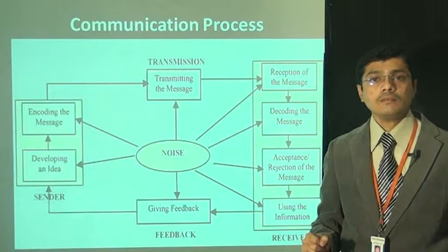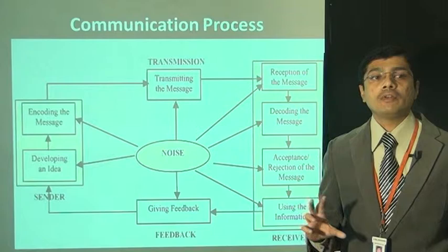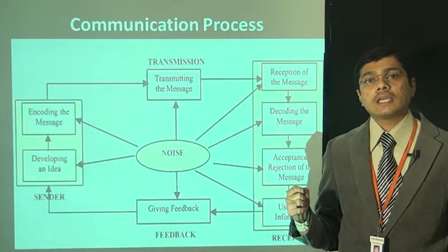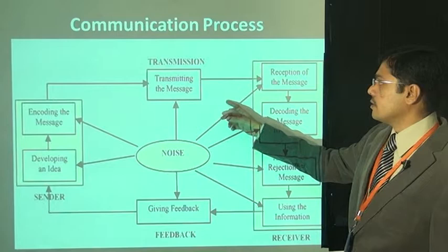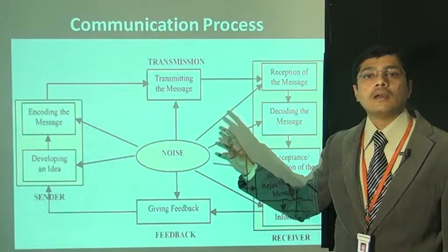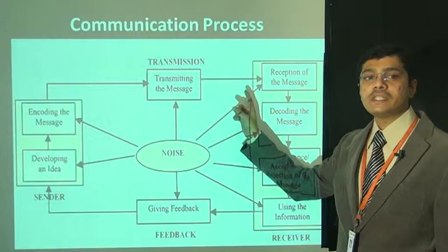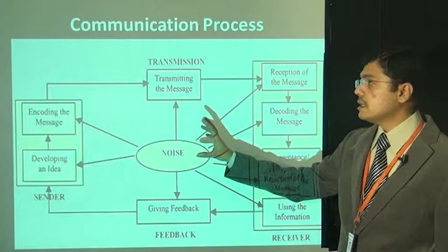Then encoding the message: whatever idea is developed in the sender's mind, he encodes it into a message — for example, through words or through pictures. That is encoding. Then transmission: after encoding the message, whatever ideas exist, he translates them into words, symbols, or graphs. Then he needs some medium or transmission channel to reach the receiver. So here we have transmitting the message.